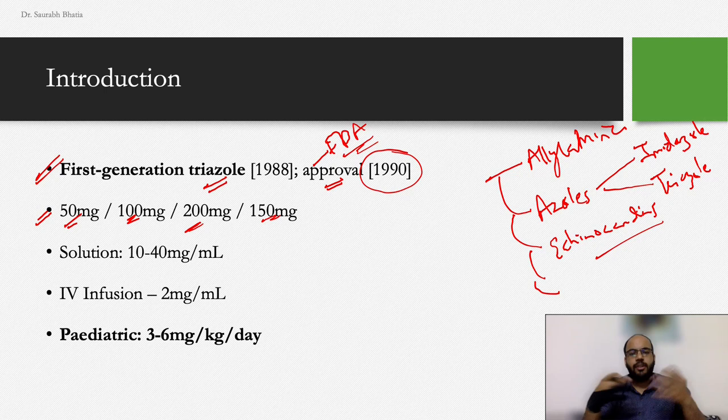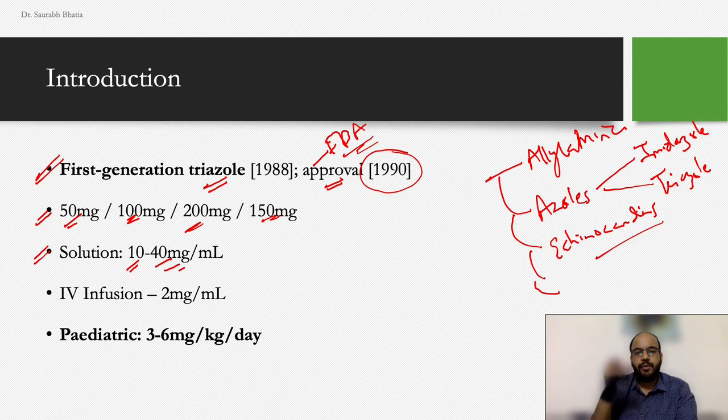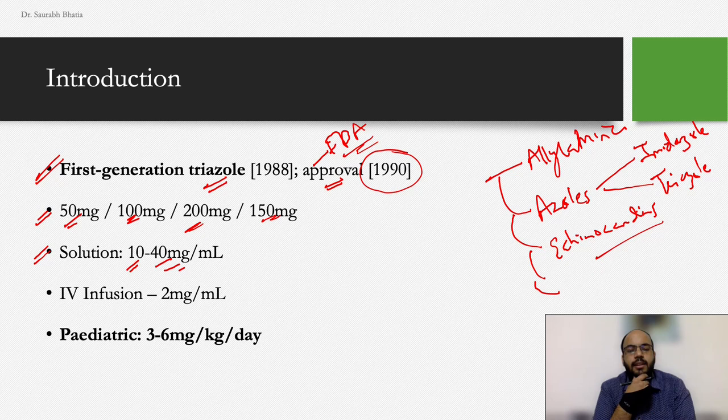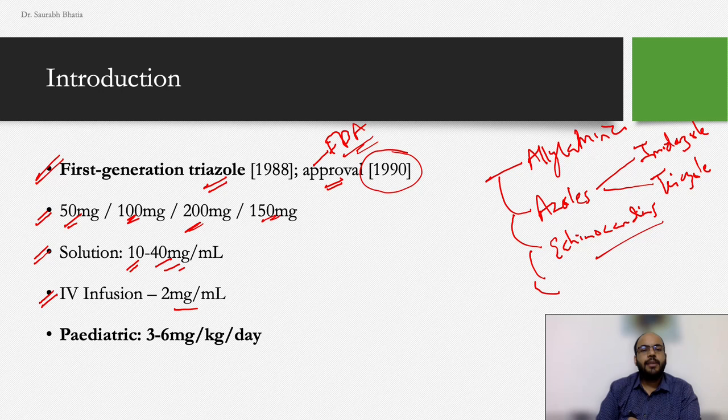Fluconazole is also available as an oral solution ranging from 10 mg/mL to 40 mg/mL, allowing dose titration based on age and weight in the pediatric population. It is also available as an IV infusion at 2 mg/mL. In dermatology, I've seen it used in complicated or recalcitrant vulvovaginal candidiasis, and it is also used to treat cryptococcal meningitis.